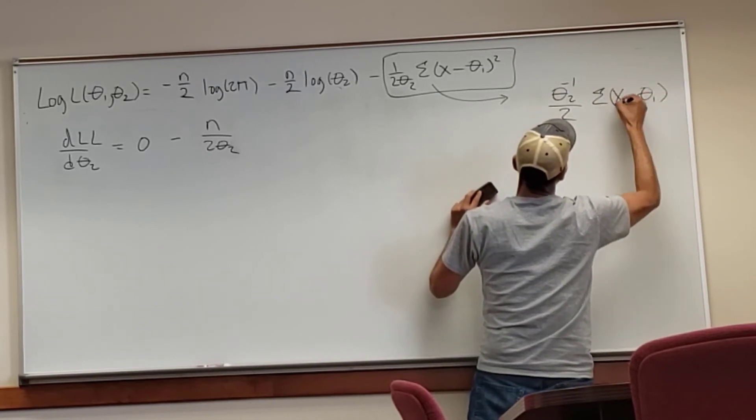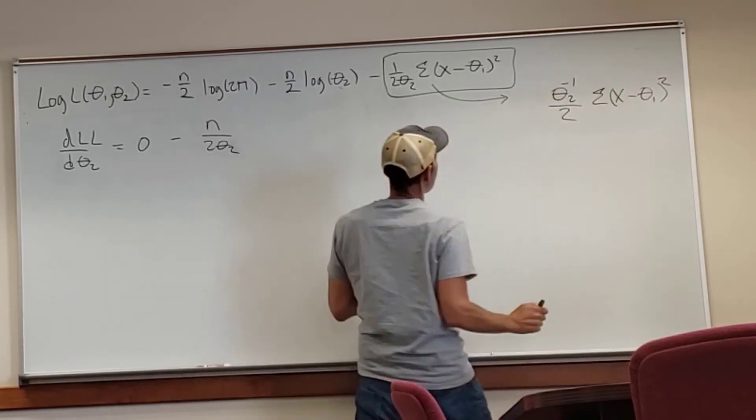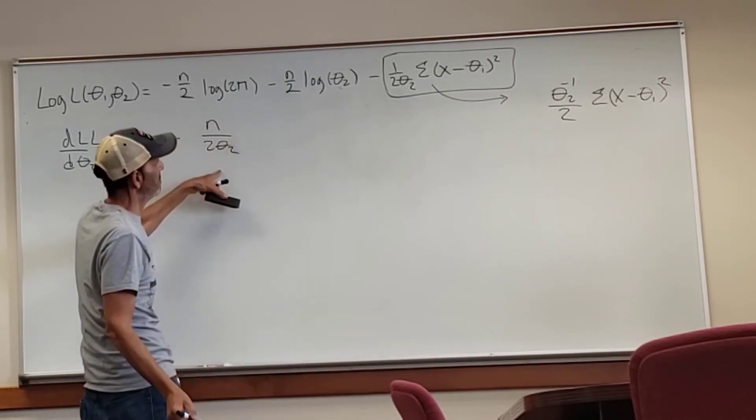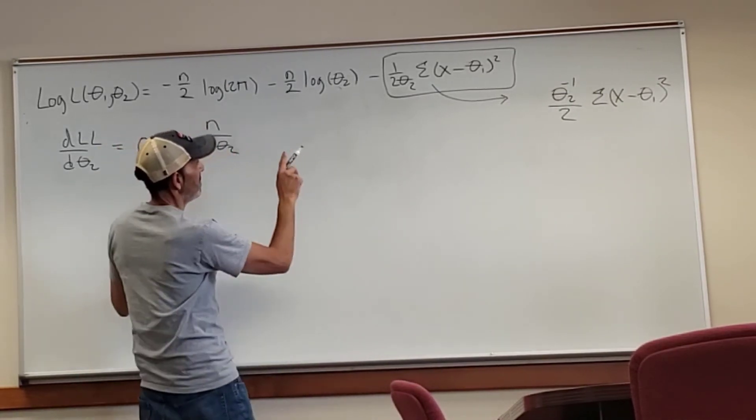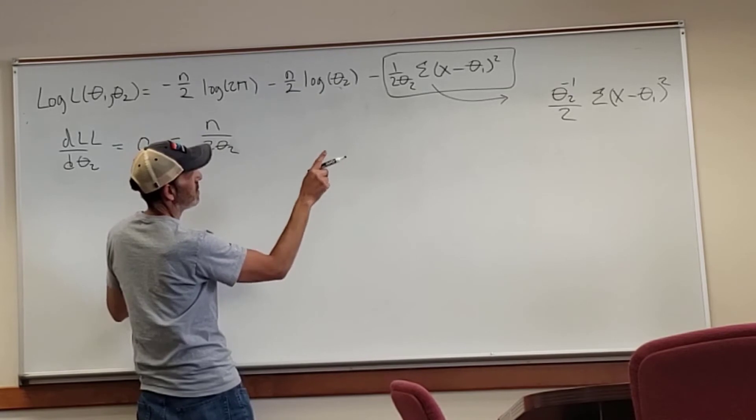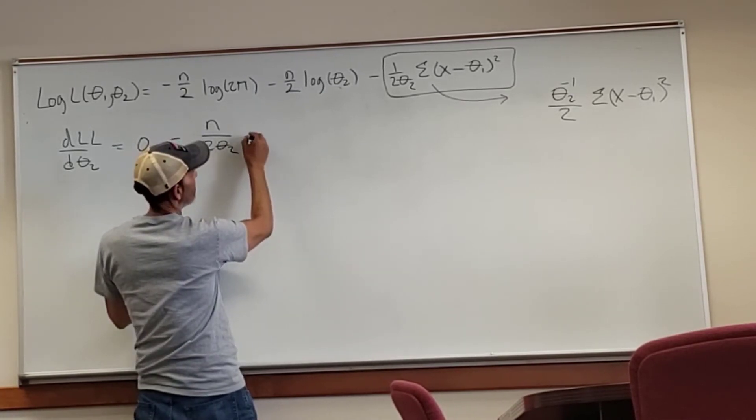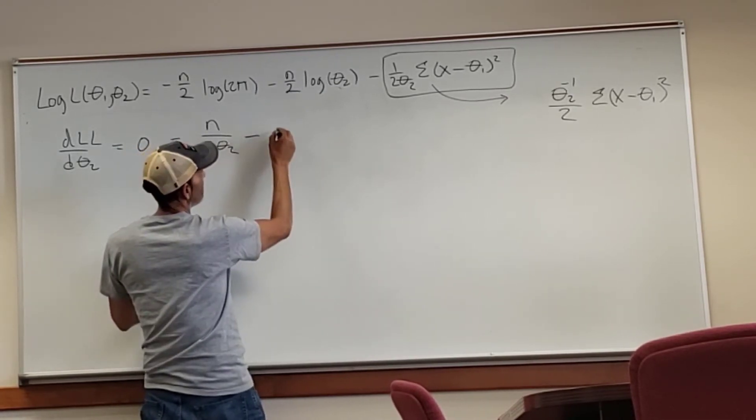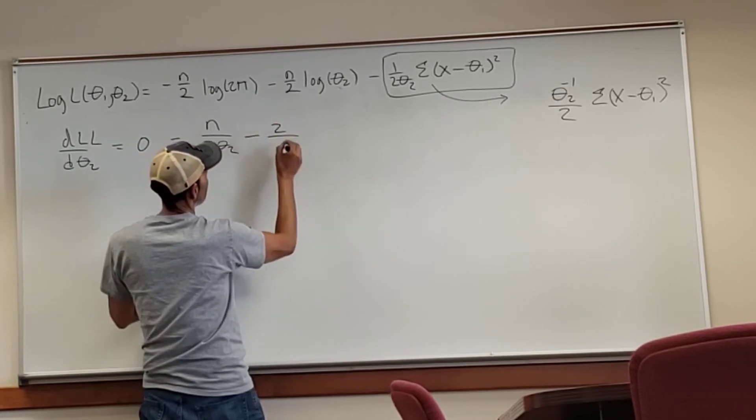Instead of theta two in the denominator, I have theta two to the negative one, so I move it up to the numerator. To move it up to the numerator, I have to have a negative one exponent, because it's not in the denominator anymore, moving to the numerator.